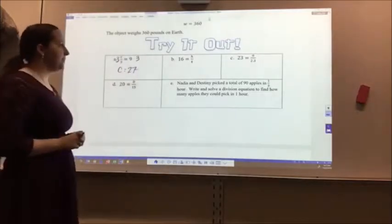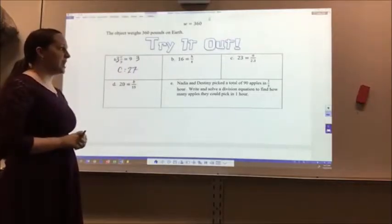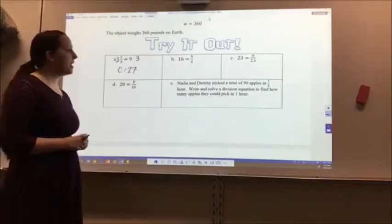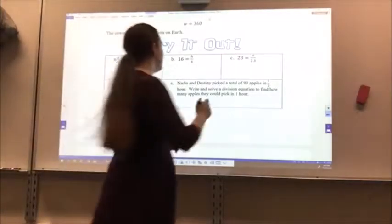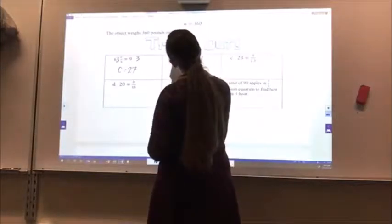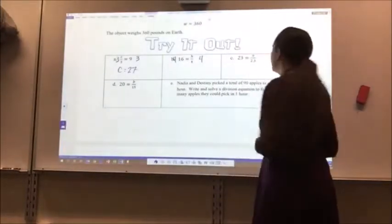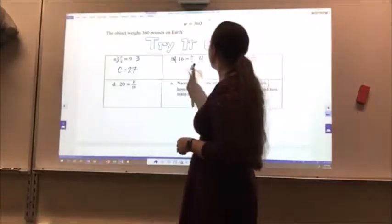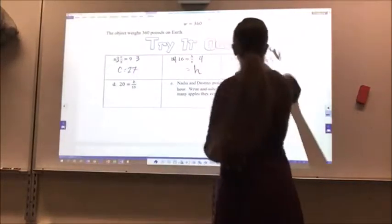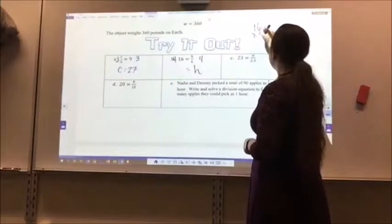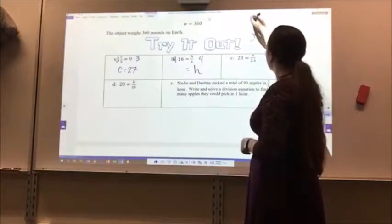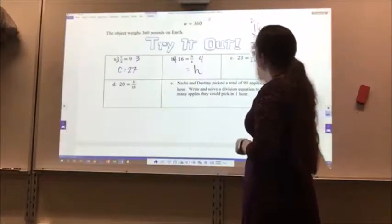For letter B, 16 equals H divided by 4. I multiply both sides by 4. When I do this, 16 times 4 is 64.